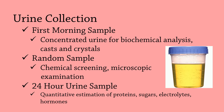The first morning sample, also called an 8-hour specimen, is collected when the patient first wakes up in the morning, having emptied the bladder before going to sleep. This is the specimen of choice for urinalysis and microscopic analysis, since the urine is generally more concentrated due to the length of time it remains in the bladder, and therefore contains relatively higher levels of cellular elements and analytes such as protein, if present.